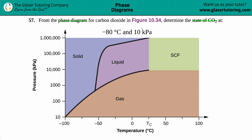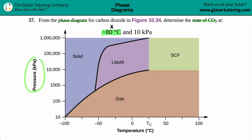All this is is basically plotting a point. We have an x-axis of temperature in degrees Celsius, and we're solving for negative 80 degrees Celsius — that's the x-coordinate. Then 10 kilopascals, since the y-axis is in kPa, that's going to be the y-coordinate.